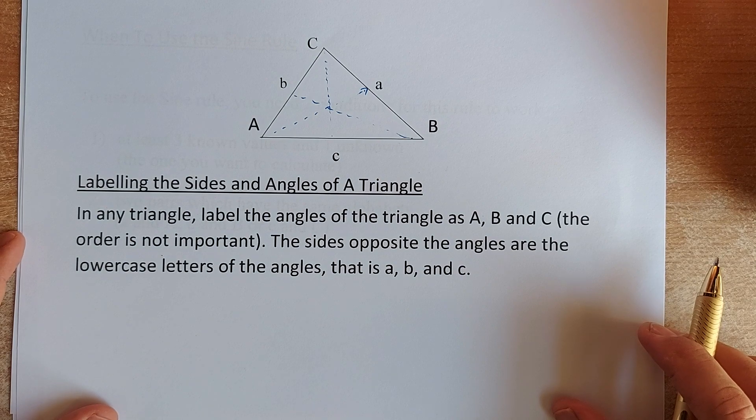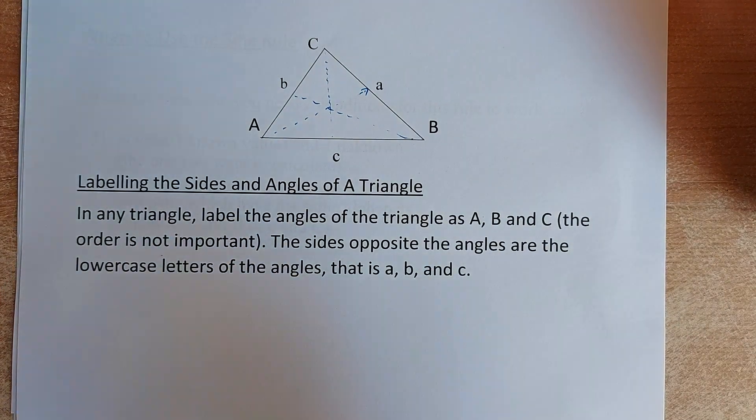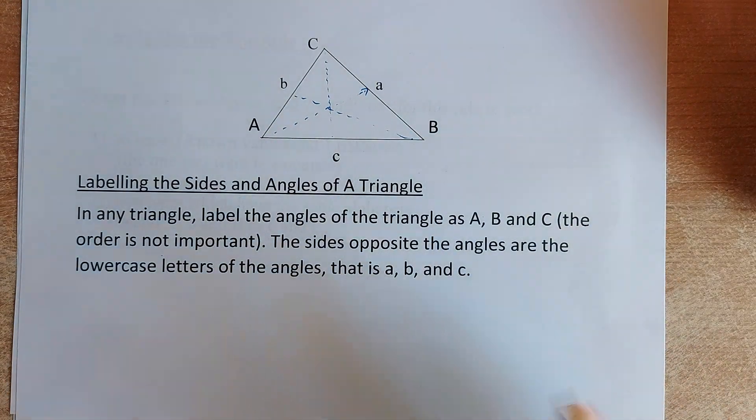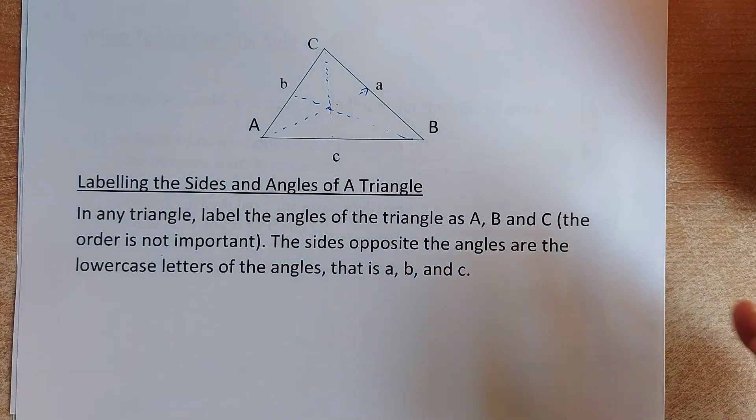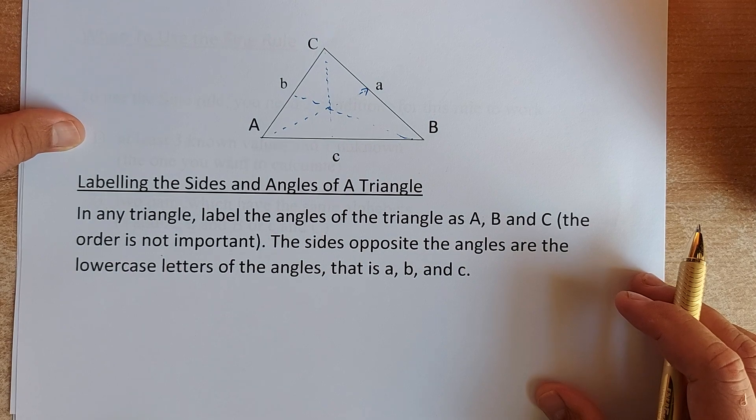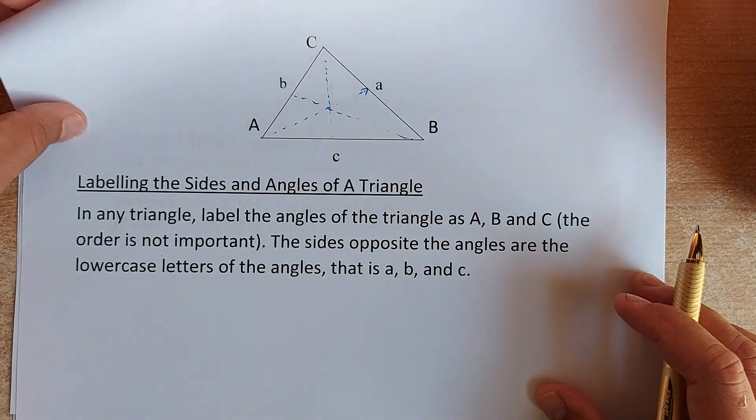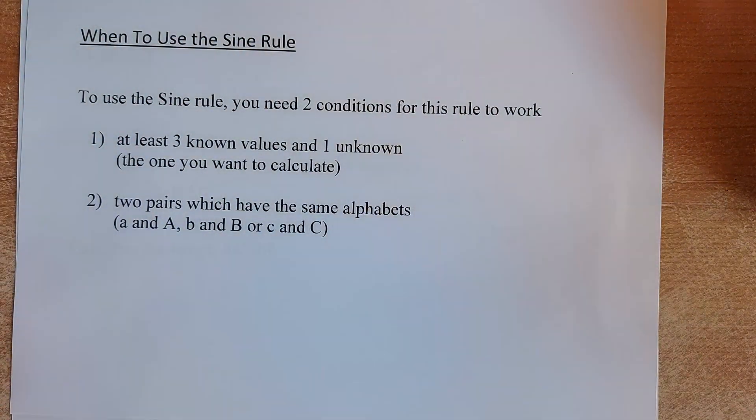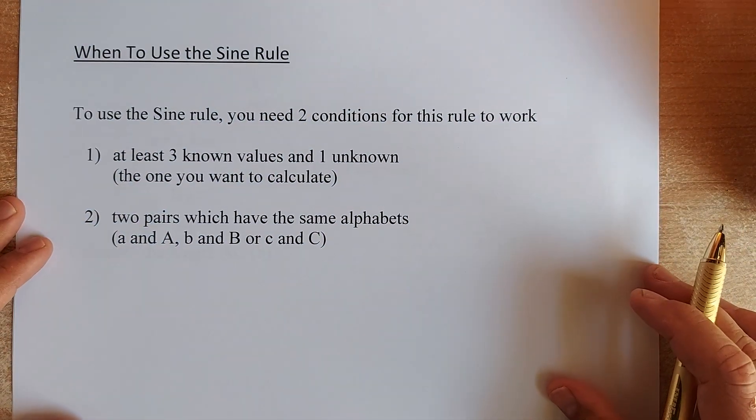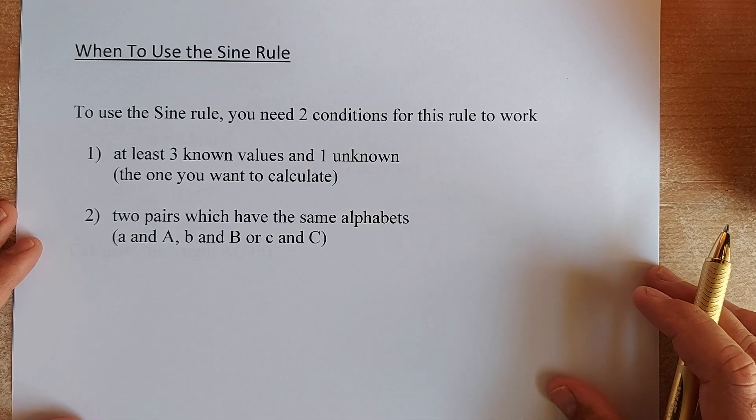When you have a question, the first thing you do, you are going to label them A, B, C. You could label them X, Y, Z. It's all dependent on which method you like. We shall look at two examples. The first example is going to be A, B, C. And the second example is going to be X, Y, Z.